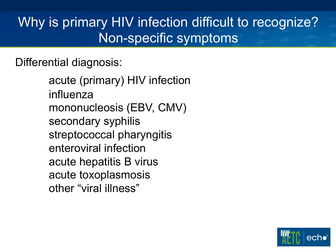When I think about primary HIV, I think about what else is in the differential, because we see all these other things much more commonly than acute HIV. But for providers seeing HIV-negative folks, I want you to think: if someone comes in with the flu, syphilis, strep throat, or any compatible syndrome in the right clinical situation, think about primary HIV as well.